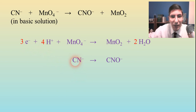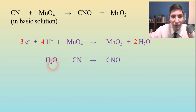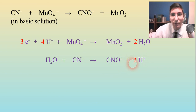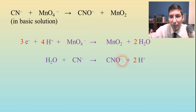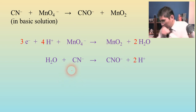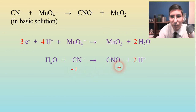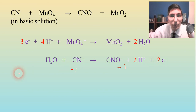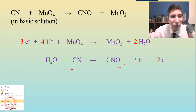For the second half reaction (cyanide to cyanate): the carbons and nitrogens are balanced. We have one oxygen to balance, so I add a water to the left side. That adds two hydrogens, so I add two H⁺ to the right side. Now balance the charges: negative one on the left, and on the right I have plus two from H⁺ and minus one from cyanate, giving positive one. So if I have negative one versus positive one, I need two electrons on the right side to make those balance out. This is oxidation since we're losing electrons.